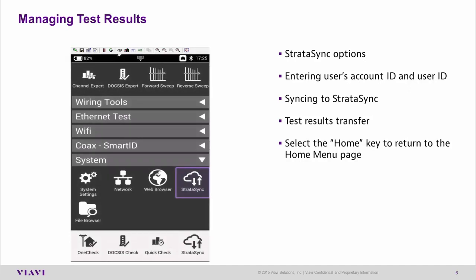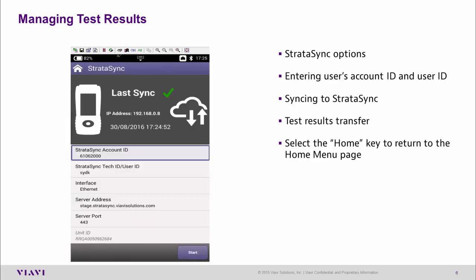Connecting to Stratasync is very easy. Simply select the Stratasync option highlighted on the screen, and when you go into Stratasync you'll be asked for some details similar to the ones you can see on the screen now — the key ones being your Stratasync account ID and tech ID.